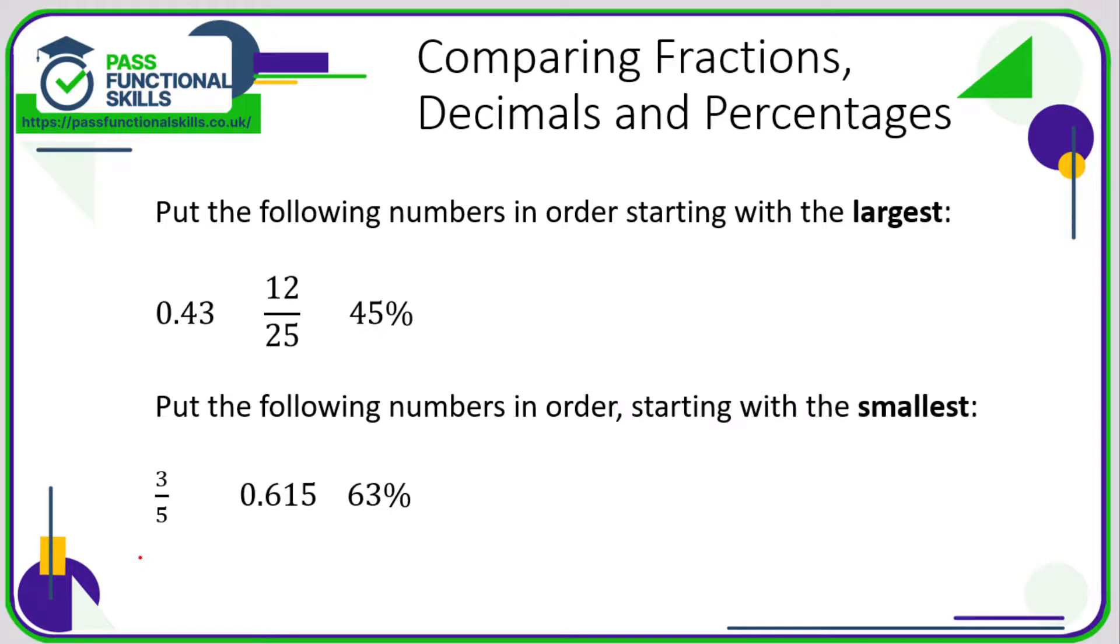0.43 is a decimal, so to convert that into a percentage we're going to multiply by 100, so that's 43 percent. To convert a fraction into a percentage, remember it's top divided by bottom times by 100.